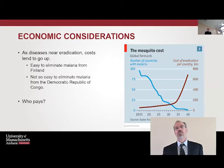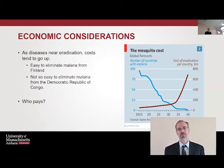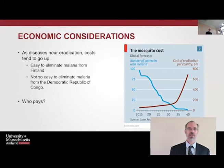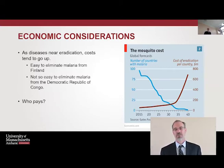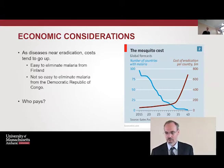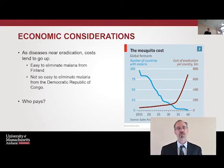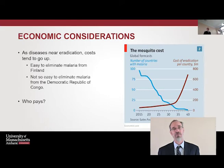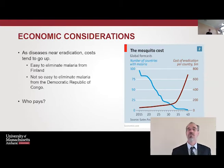As diseases near eradication, costs tend to go up. It's easy to eliminate malaria from Finland, but not from the Democratic Republic of Congo, which is huge, is a prime area for holoendemic malaria transmission, and is filled with isolated populations that are difficult to reach. Looking at this graph from The Economist, the cost of elimination per country goes up as the number of countries with malaria goes down. In the final stretch of any disease it costs more and more, raising the question of when the money runs out and whether control is actually a better option.